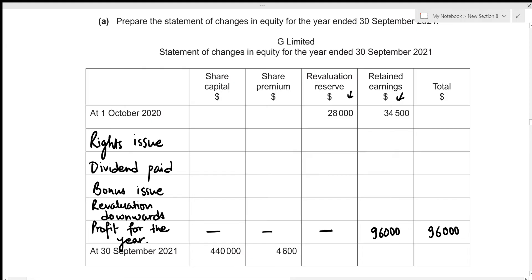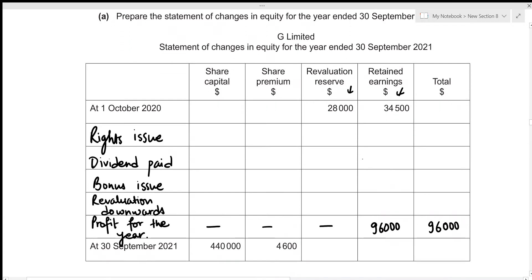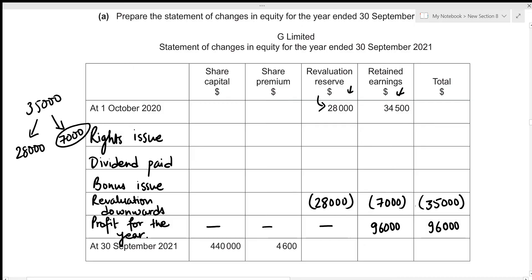For the revaluation downwards: on 30 September 2021, property was revalued downwards by 35,000. If it were upwards we would add to revaluation reserve, but since it's downwards we subtract. However, the opening balance of revaluation reserve is only 28,000, so it cannot sustain a decrement of 35,000 — we can only decrease by 28,000. The remaining 7,000 must be deducted from retained earnings. This gives a total reduction due to revaluation downwards of 35,000, which does not affect share capital or share premium.